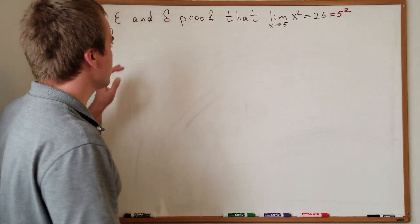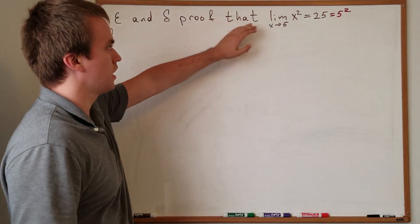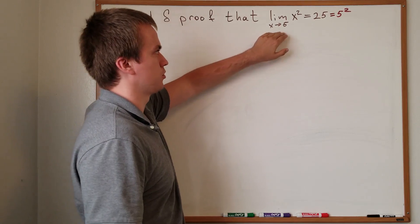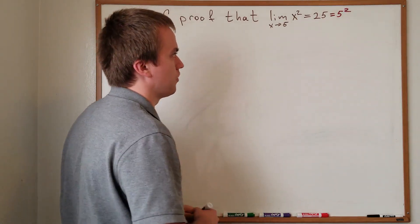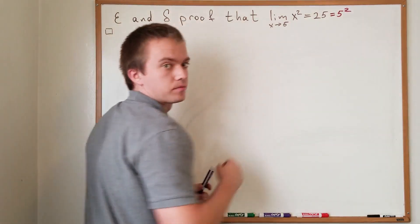Hello guys. In this video I want to show you epsilon-delta proofs that the limit of x squared when x approaches five is equal to 25, or in other words, five squared.